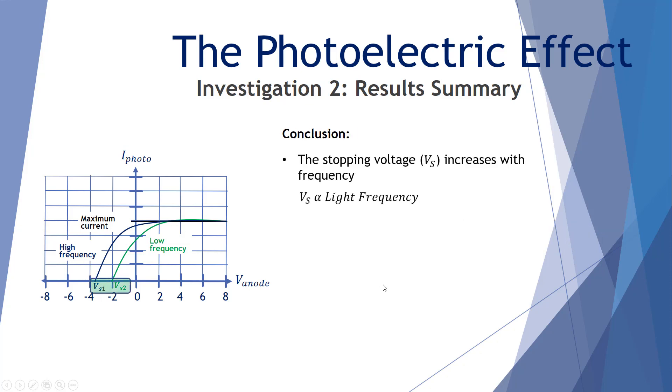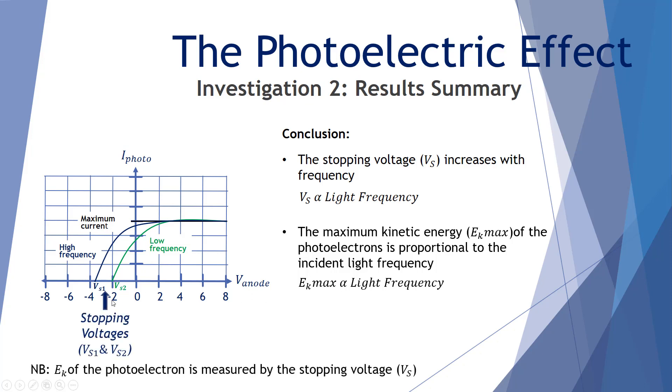Conclusion from this particular investigation. The stopping voltage VS, so this is stopping voltage 1 and stopping voltage 2, hence the VS1 VS2, the stopping voltage increases with frequency. That is, VS is proportional to the light frequency. The higher frequency has a higher stopping voltage than does the low frequency. The maximum kinetic energy of the photoelectrons is proportional to the incident light frequency. So the EK max is proportional to light frequency. And we know that because the stopping voltage is actually what we use to measure the EK, the kinetic energy maximum of the photoelectrons. So our findings again is the stopping voltage is proportional to light frequency, which informs us that the EK max of the photoelectrons are also proportional to light frequency.